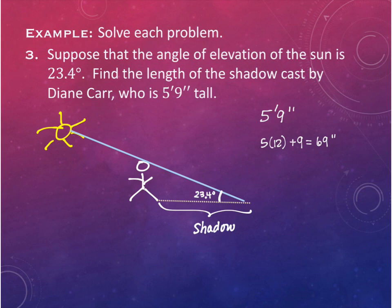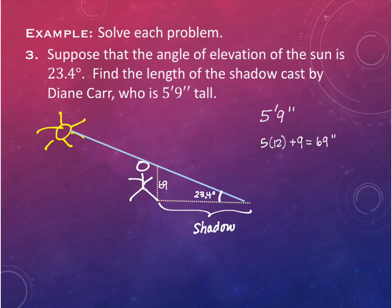So we have 69 on our triangle. This is easier than the previous problems because we only need to find one thing - the shadow. What trig function relates the 69, the 23.4 degrees, and the shadow? Tangent.